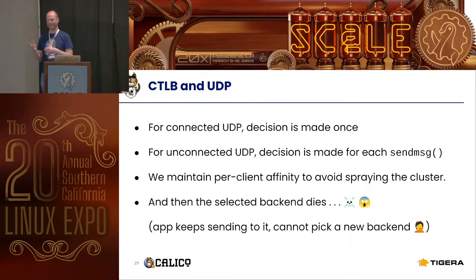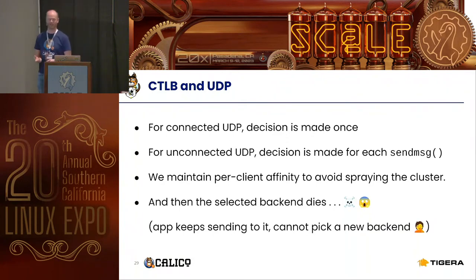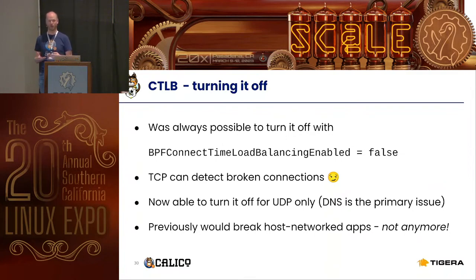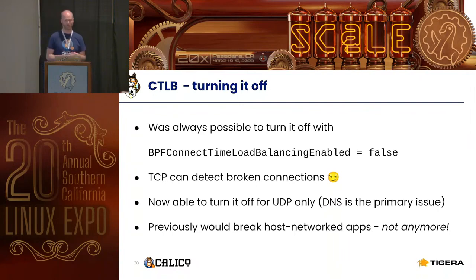If the application selects a backend but the backend dies, a UDP application will keep sending to that dead backend — TCP can resolve broken connections but UDP can't. So you can turn off connect-time load balancing entirely, or turn it off only for UDP, since DNS is the primary use case here. If you have a cluster that reshuffles DNS a lot, you would probably notice it.